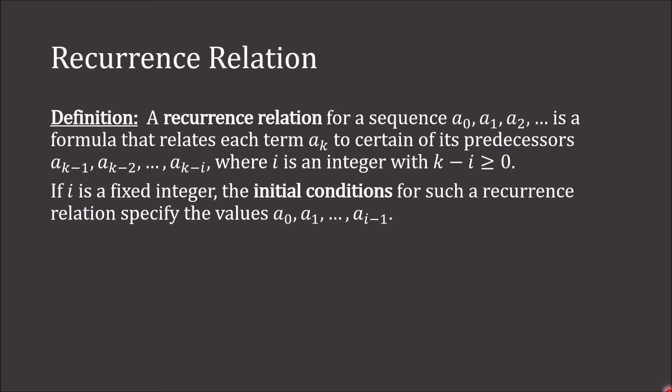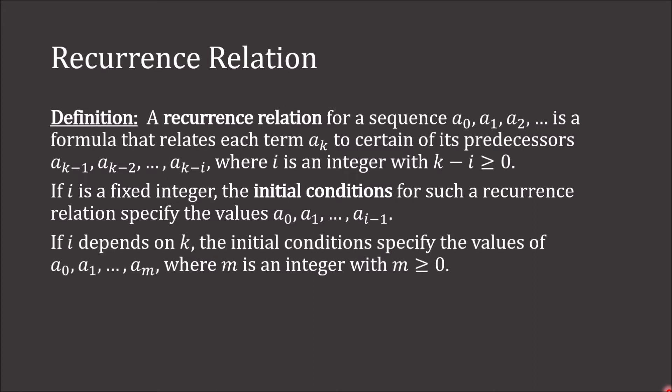If i is a fixed integer, the initial conditions for such a recurrence relation specify the values of a0, a1, up through a sub i minus 1. If i depends on k, the initial conditions specify the values of a0, a1, up through a sub m, where m is an integer and m is greater than or equal to 0.